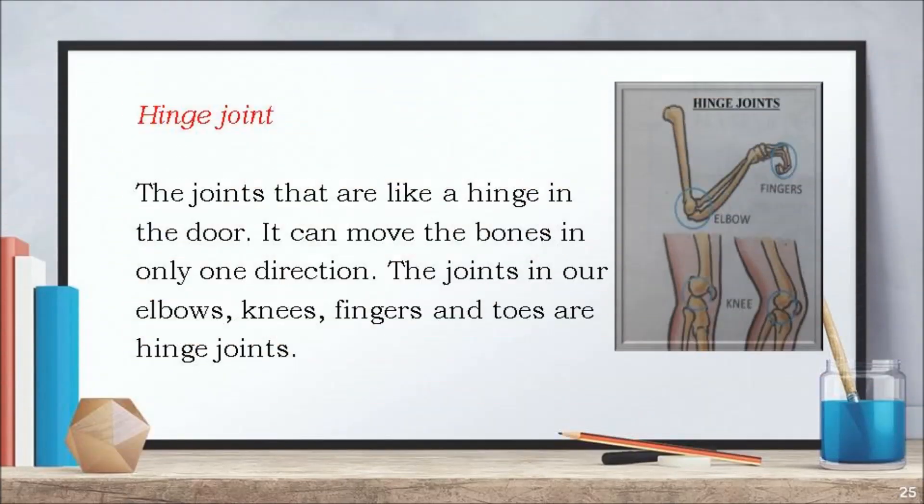The joints that are like a hinge in the door are called hinge joints. The hinge joint can move the bones in only one direction. The joints in our elbows, knees, fingers and toes are hinge joints.